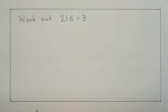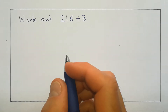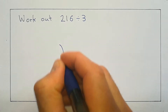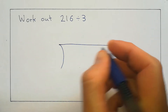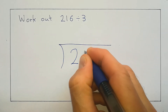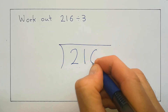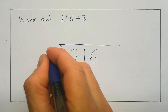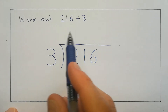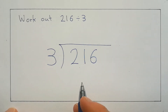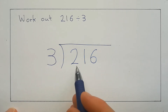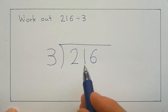Let's have a look at our first division. We've got 216 divided by 3. The first thing we're going to do is to draw our bus stop. And the 216, the first number, goes inside the bus stop. And 3 is going to go on the outside. Our answer is going to end up on the top of the bus stop. So we're going to take the 3 and try to divide it into each of these digits in turn.